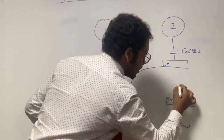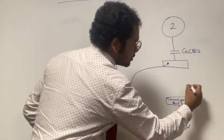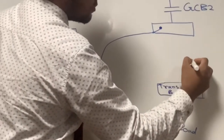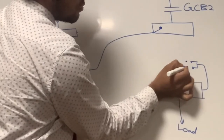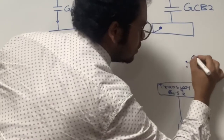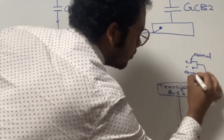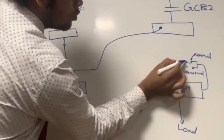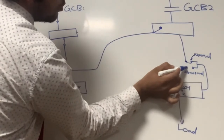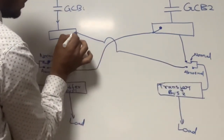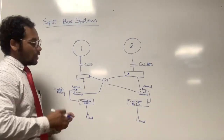On the number two side, there is also a transfer relay with the same arrangement — a normal position contact connecting the number two main bus bar to the transfer bus, and an abnormal position contact connected to the number one side bus bar. Both sides are mirror images of each other, with their own transfer relays providing normal and alternate supply paths.